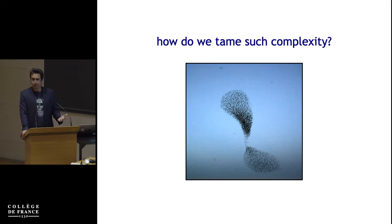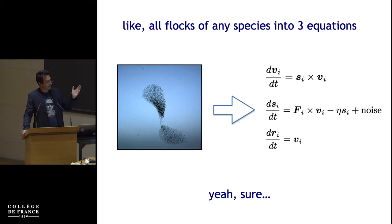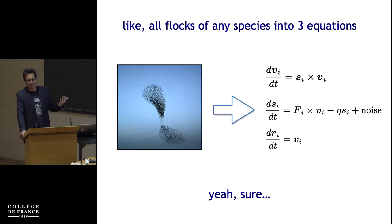So how do we tame such complexity? Well, if you're a physicist, you do that by doing outrageously minimal models. Really, I want to emphasize: outrageously. At the end of the talk I will introduce something like that — those equations may seem complicated, but it's actually three equations.